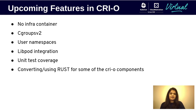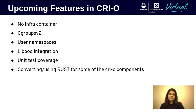Speaking of features, here are some cool things we're working on for the near future that were precipitated by the community. Dropping the init container where it is not needed will improve the speed of containerized workloads. We're also adding Cgroups v2 and user namespace support, as well as increasing our unit test coverage. Other exciting work includes integration of libpod with CRI-O and potentially moving some components over to Rust to improve performance. Everyone is welcome to contribute to these features.